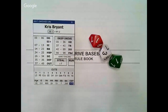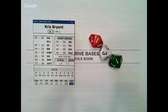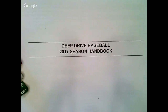To purchase Deep Drive Baseball, go to deepdrivebaseball.com and click the store link. At the store, you can choose from any season I have created to date. When you purchase a season, you'll receive a zip file which contains several PDF files including the rulebook and the season handbook which includes charts specific to that season.